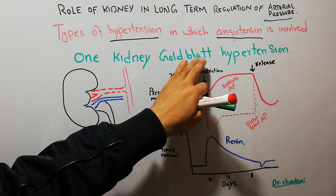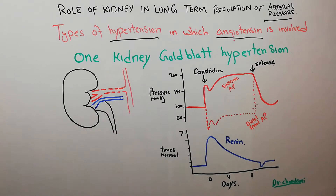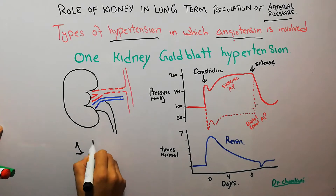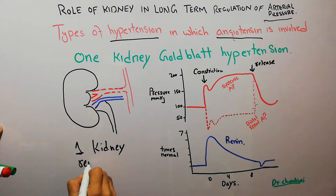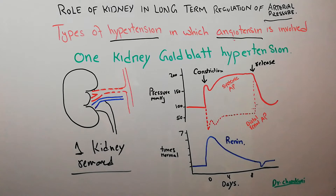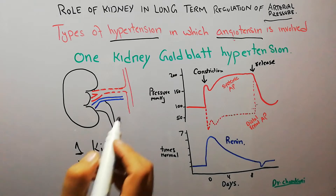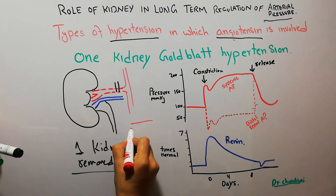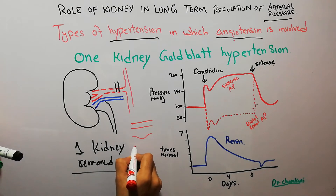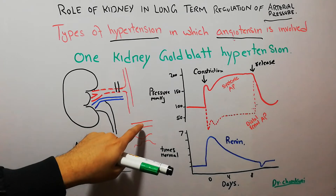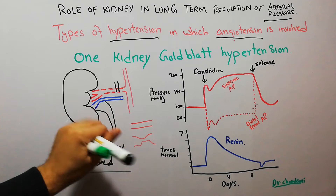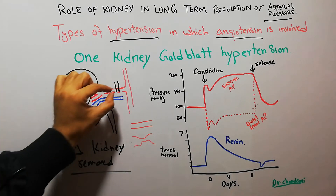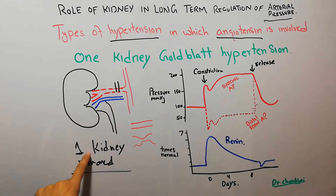One kidney Goldblatt hypertension occurs when one kidney is removed from the body and a clamp is applied to the renal artery of the second kidney. The clamp is basically constricting the diameter of that renal artery — before applying the clamp the diameter is normal, and after applying the clamp the diameter is decreased. These are the experiments done by Goldblatt, and that's why it is known as one kidney Goldblatt hypertension.